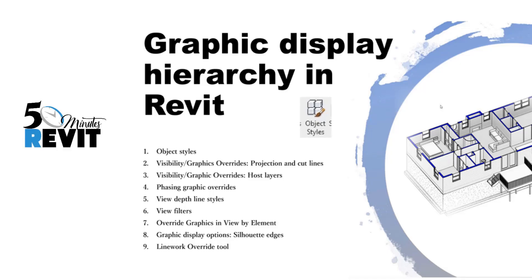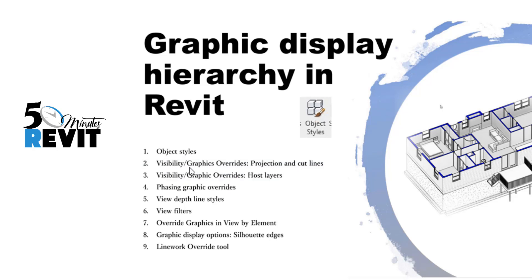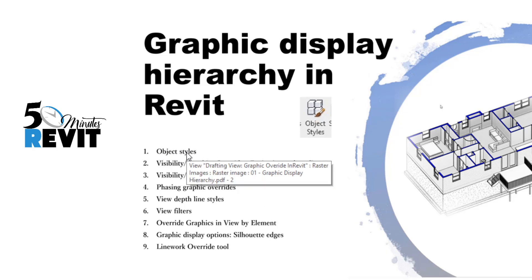Hi everyone, and we're back again with Five Minute Revit. Today we will see the second degree in visibility graphics — the visibility graphic override. Last session we saw Object Style: how it works and how it's applied for the whole project.